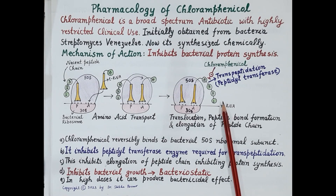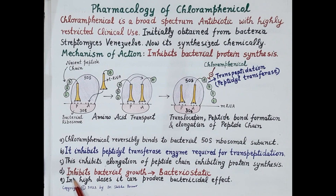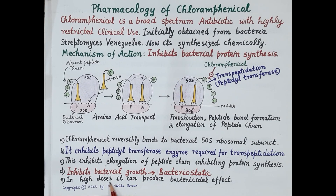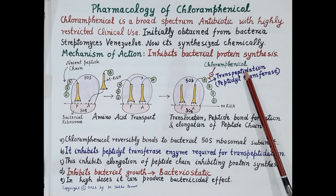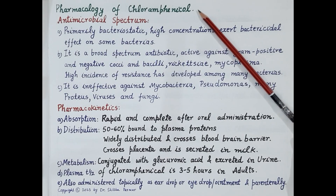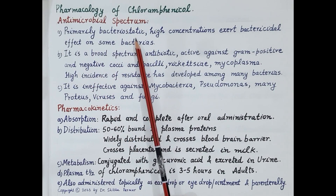By inhibiting bacterial protein synthesis, chloramphenicol limits bacterial growth, exerting a bacteriostatic effect. However, in higher doses chloramphenicol can produce a bactericidal effect and kill bacteria. This is the mechanism of action of chloramphenicol.